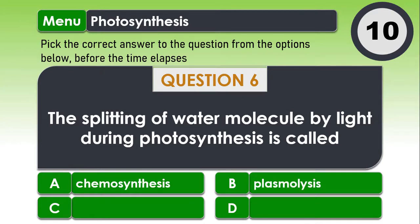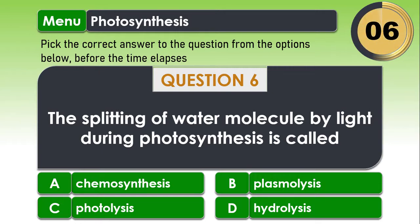Question 6. The splitting of water molecule by light during photosynthesis is called A. Chemosynthesis B. Plasmolysis C. Photolysis And D. Hydrolysis. If your answer is C. Photolysis, then you are correct.